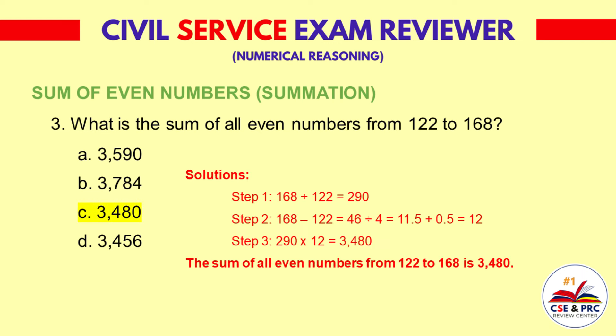The answer is c. 3,480. Solutions — Step 1: 168 plus 122 is equal to 290. Step 2: 168 minus 122 is equal to 46, divided by 4 is equal to 11.5, plus 0.5 is equal to 12. Step 3: 290 times 12 is equal to 3,480. The sum of all even numbers from 122 to 168 is 3,480.